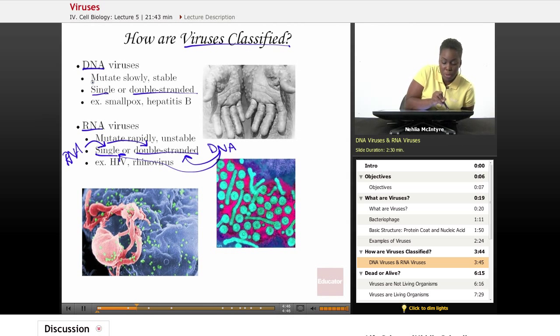The DNA viruses mutate very slowly. However, the RNA viruses mutate very rapidly. The DNA viruses are very stable viruses. They last longer, and the RNA viruses are very unstable.